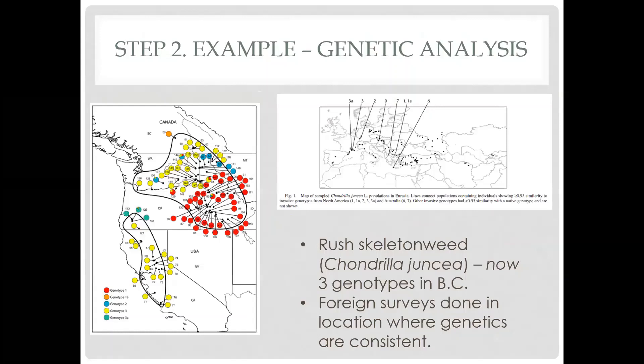This is an example of genetic analysis. The genetic identification becomes more significant at this step. Rush skeleton weed has several different genotypes, and we have a brand new genotype in BC — a tiny orange one at the top of the chart — growing differently here in the province. Organisms choose their host plant down to the genetic level, so surveys for potential biocontrol agents are done in countries and areas housing plants of specific genetic types, hopefully matching what we have. Sometimes that's not possible when plants have come here and genetically evolved.